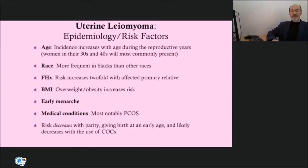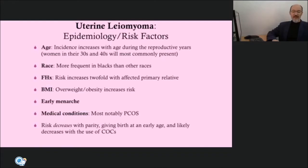Generally, low-dose oral contraceptive pills are protective against the development of new fibroids but may stimulate existing fibroids. The exception may be in women who start oral contraceptive pills between the ages of 13 and 16. The use of hormone replacement in postmenopausal women with fibroids is associated with fibroid growth but typically doesn't result in clinical symptoms. Those who have higher parity, a more recent pregnancy, and have breastfed all display lower incidences of myoma formation. The risk of fibroids also decreases with oral contraception use and injectable depot medroxyprogesterone acetate use.